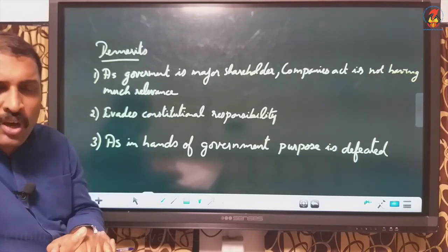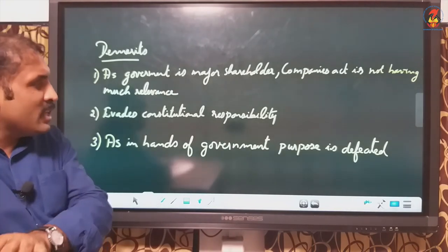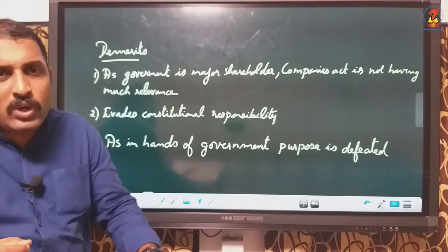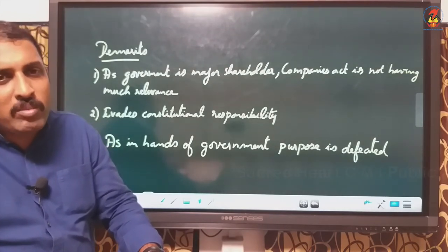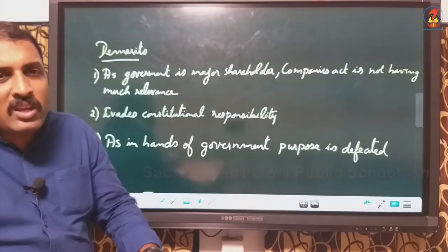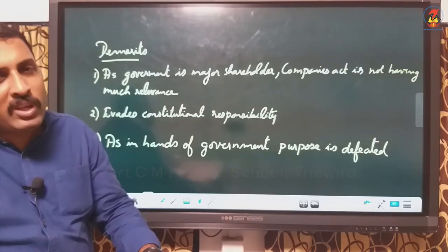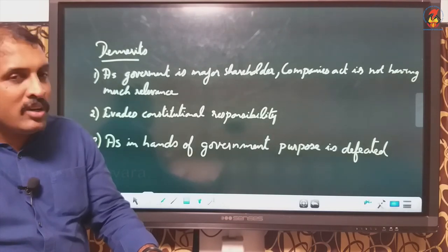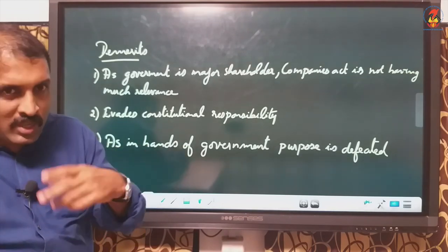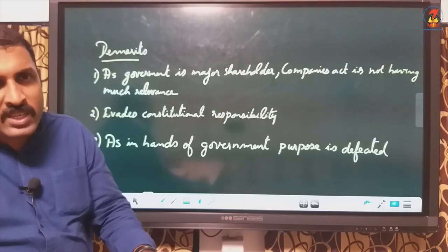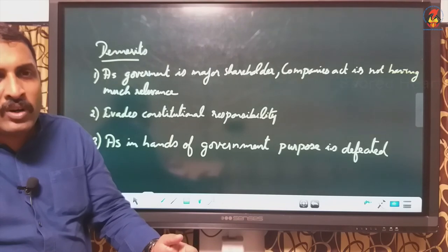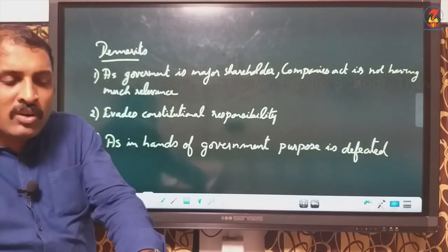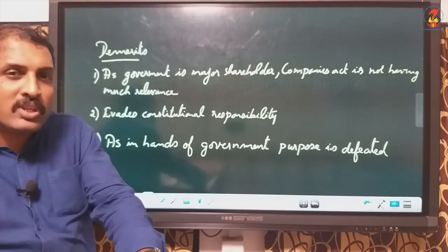It is not directly responsible to the Parliament. Also, as it is in the hands of government, the purpose can be defeated. Government is a body working for the service of the public, but many times when it enters into business it strictly follows profit motive and the service concept is often forgotten. So the purpose for which the government company is formed is many times ignored or not followed. That is all about this chapter, after having seen department undertaking, statutory corporation, and government company.